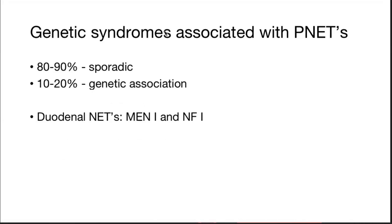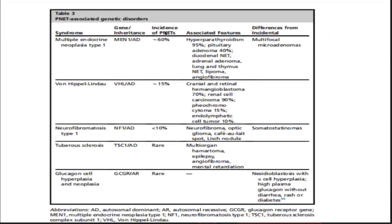Duodenal neuroendocrine tumors are generally associated with MEN1 and NF1. Pancreatic neuroendocrine tumors are most commonly associated with MEN1, followed by VHL, NF1, tuberous sclerosis; and glucagon cell hyperplasia and neoplasia are rare.